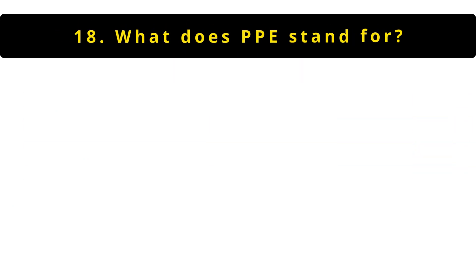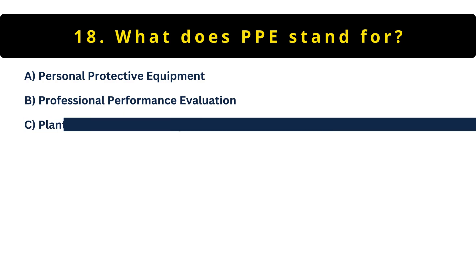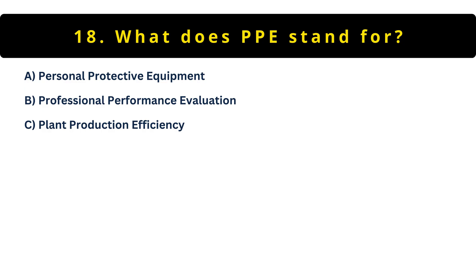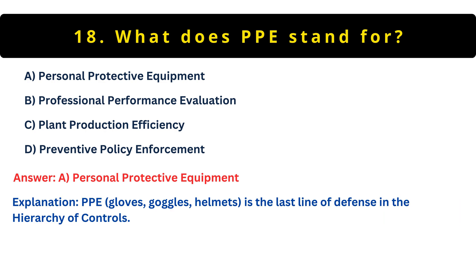Question 18: What does PPE stand for? Option A: Personal protective equipment. Option B: Professional performance evaluation. Option C: Plant production efficiency. Option D: Preventive policy enforcement. It's A — personal protective equipment, like gloves and goggles, is essential. Remember, it's your last line of defense. The hierarchy of controls tells us to first try eliminating hazards completely before relying on PPE.